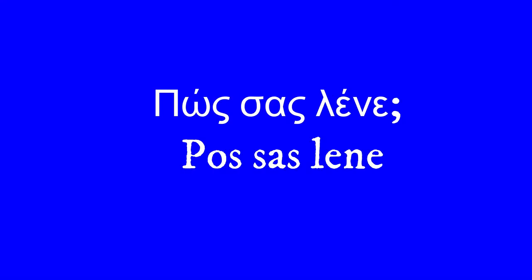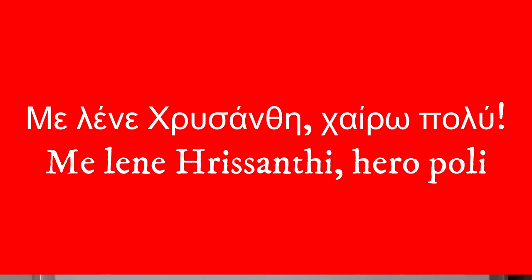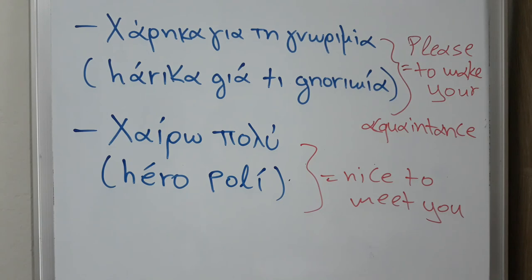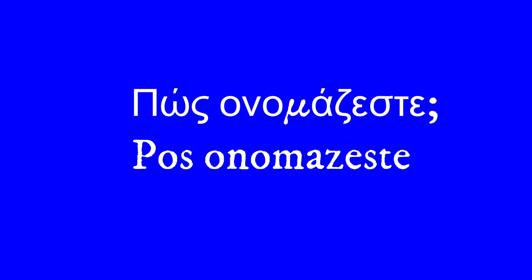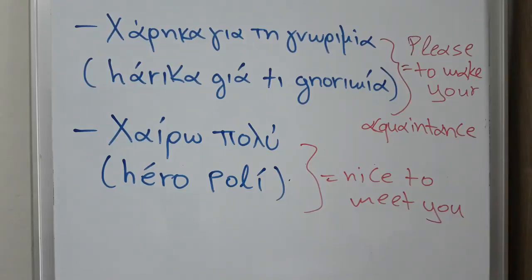Let's hear a hypothetical formal dialogue: Πώς σας λένε? — Με λένε Χρυσάνθη. Χαίρω πολύ. — What's your name? My name is Χρυσάνθη. Nice to meet you. — Πώς ονομάζεστε? — Ονομάζομαι Χρυσάνθη. Χάρηκα για τη γνωριμία. — What's your name? My name is Χρυσάνθη. Pleased to make your acquaintance.